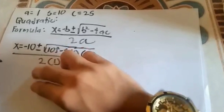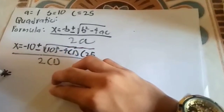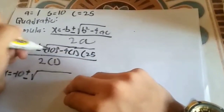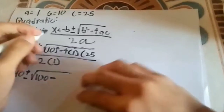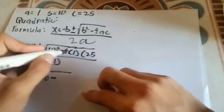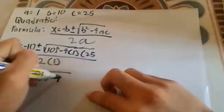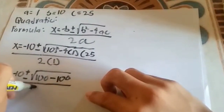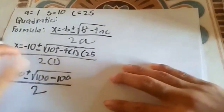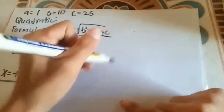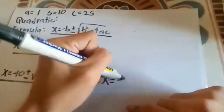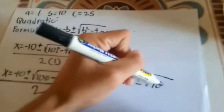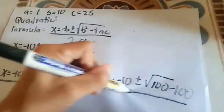Let's solve this. X equals negative 10 plus or minus radical — 10 times 10 equals 100 — minus 4 times 1 equals 4, and 4 times 25 is 100, all divided by 2 times 1 which is 2. So we have X equals negative 10 plus or minus radical 100 minus 100, all divided by 2.